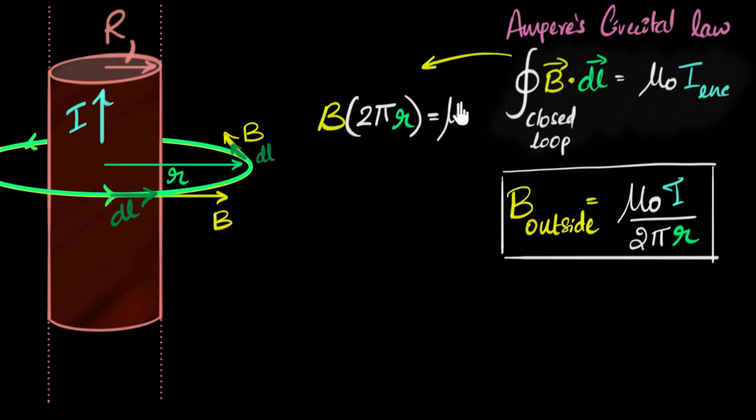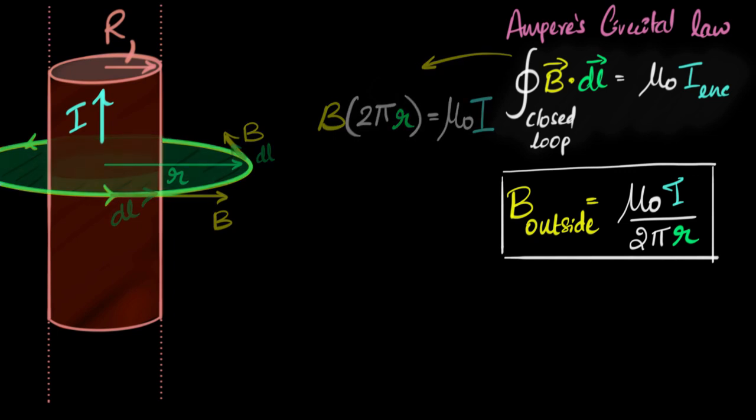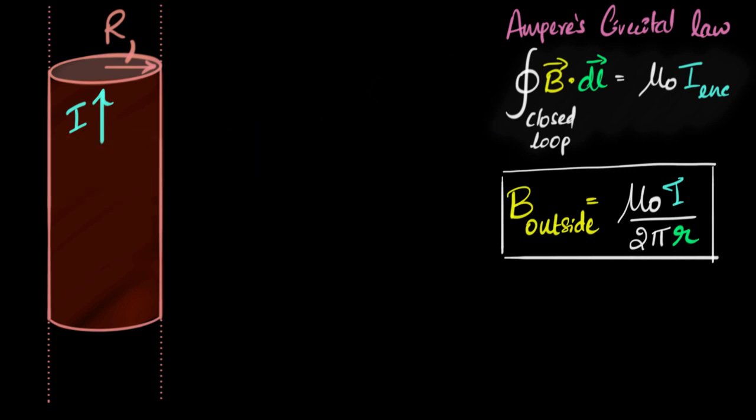According to the law, that equals mu naught times the enclosed current. To find the enclosed current, we attached a surface and found that the entire current i is being enclosed. So we get B times 2 pi r equals mu naught into i. If we rearrange, we get this expression. But again, a full detailed version can be found in our previous video. But now, we need to figure out what the magnetic field is inside the wire.